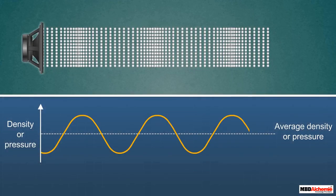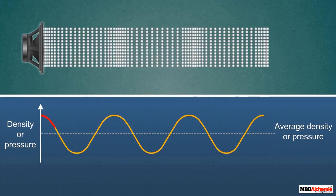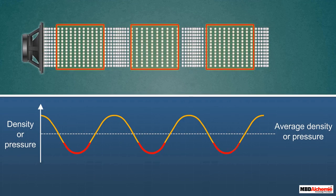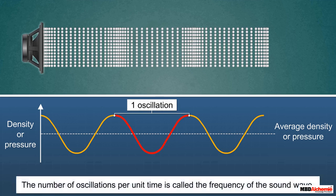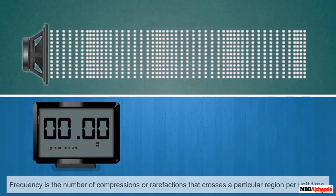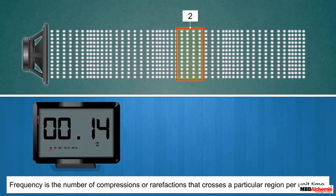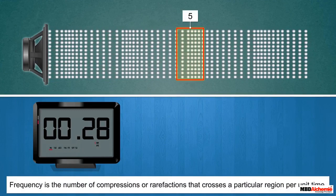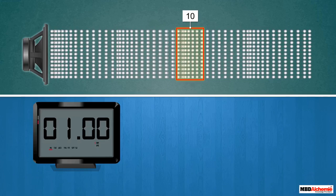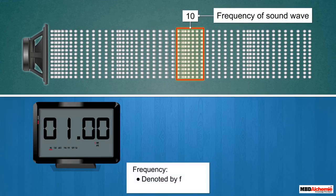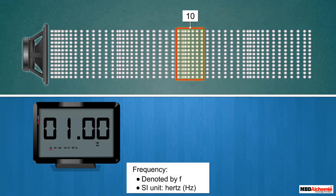When sound waves propagate through a medium, the density of the medium oscillates between a maximum and minimum value. The change in density from maximum to minimum and back to maximum makes one complete oscillation. The number of oscillations per unit time is called the frequency of the sound wave. Similarly, if we count the number of compressions or rarefactions crossing a particular region per unit time, we get the frequency of the sound wave. Frequency is denoted by the symbol F, and its SI unit is Hertz.